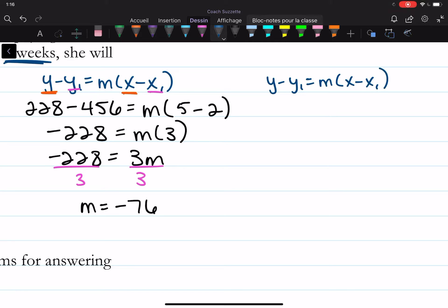If we substitute in just one point here and here, and then the slope, and then rewrite this formula so that it's in slope-intercept form, then we can see what the original amount was. All right, let's keep going.